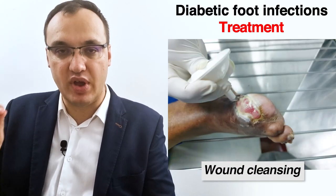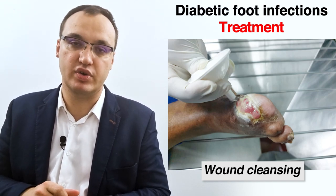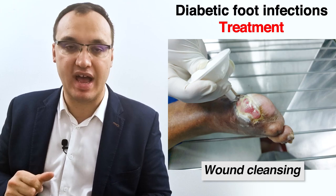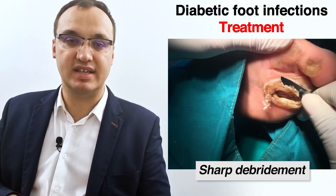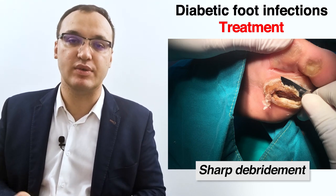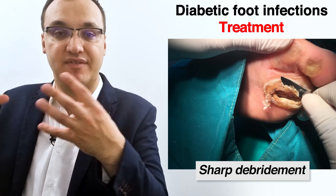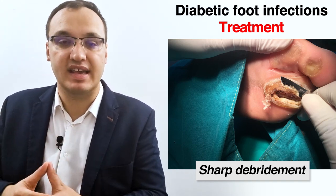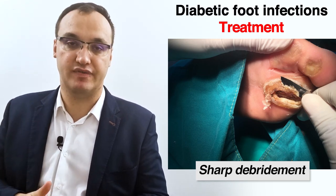We irrigate and debride the wound, cleansing it of all bacteria. Sharp debridement means we cut out the dead tissue and bacteria, leaving healthy living tissue that can then heal better and quicker. Therefore debridement is very important.